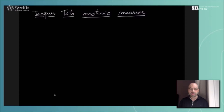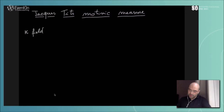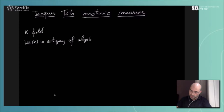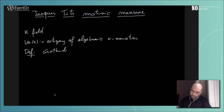I tried to prepare this talk to be as didactic as possible, so please ask questions to make the exposition more interactive. We'll start with the base field — little k will stand for our base field — and I will denote by Var_k the category of algebraic varieties defined over k. And I start right away with the main definition, which is the definition of the Grothendieck ring of varieties, denoted K₀(Var_k).